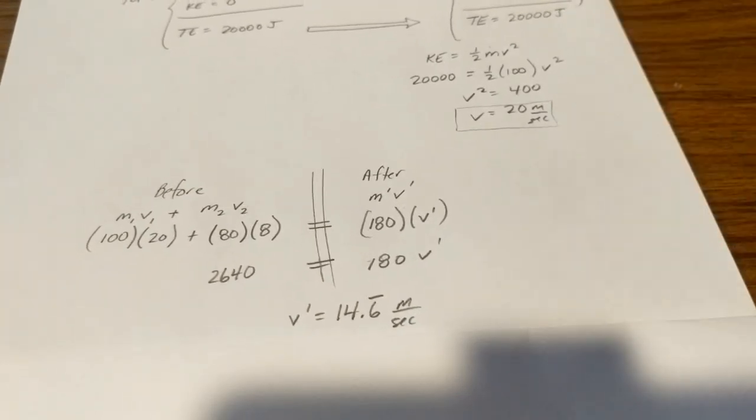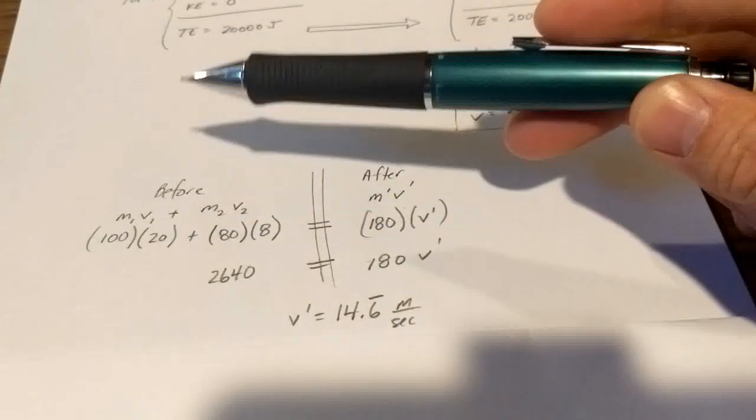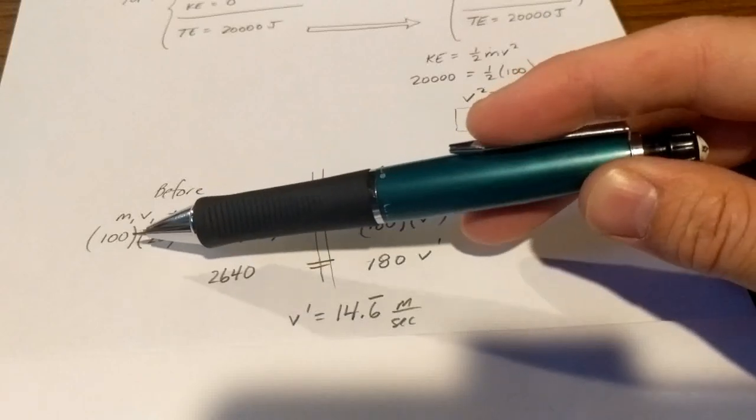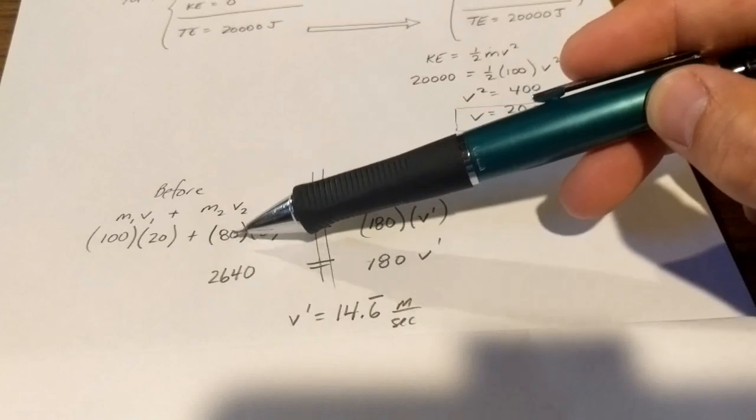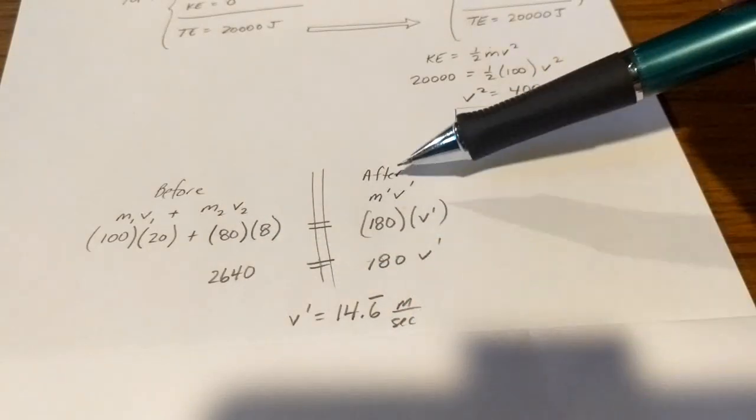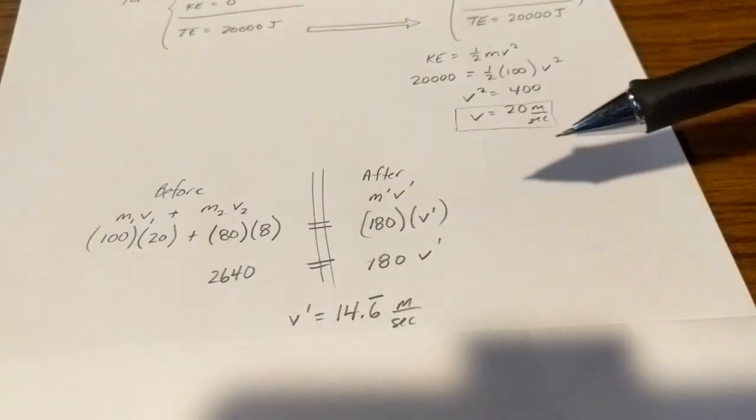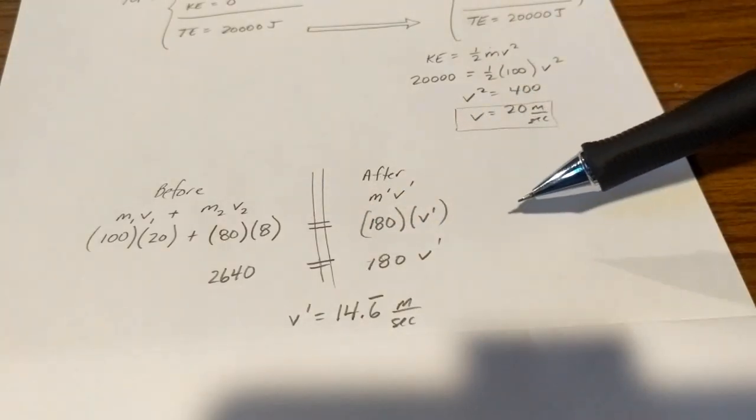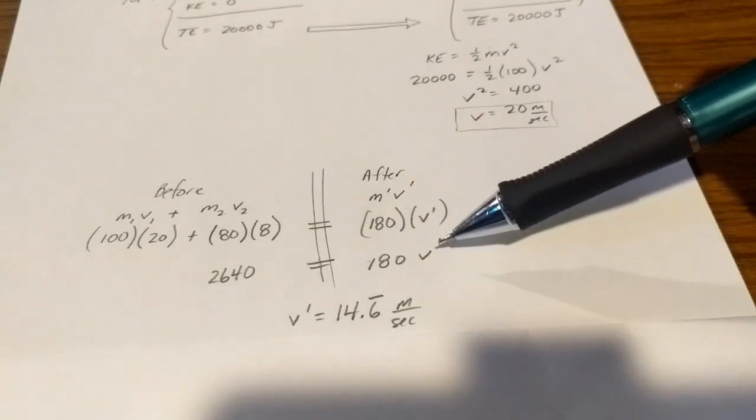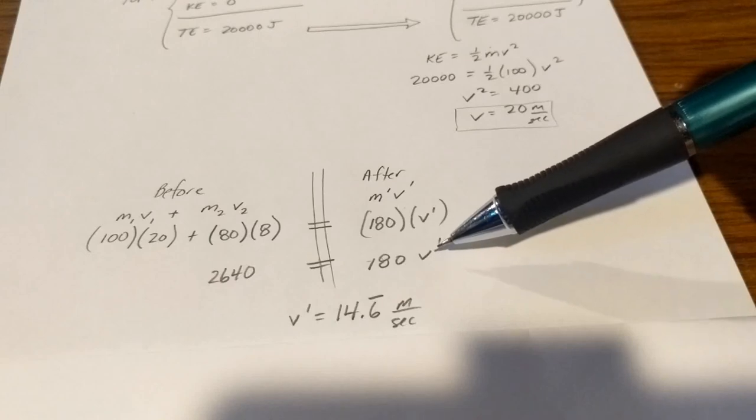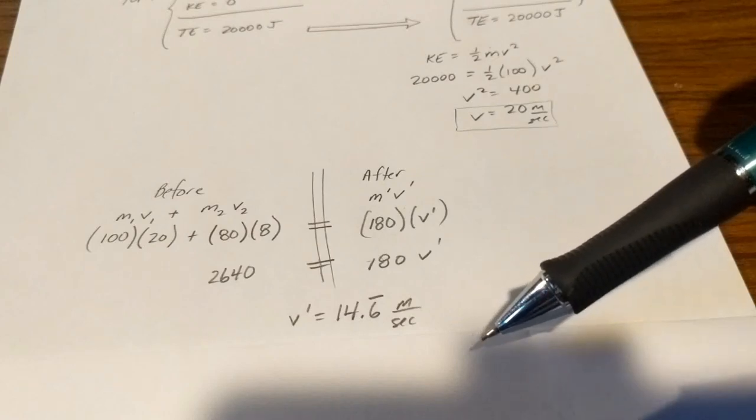So here's the before. The before situation is that Batman before colliding with the crook is with his mass of 100 kilograms going at 20 meters per second, and the crook with the mass of 80 is going eight. And then after the collision, this is a coupling because Batman catches the crook and moves forward with him. The mass is combined. It's now 180 kilograms and we're supposed to find out the final speed, and we end up with 14.6 repeating meters per second for their final speed.